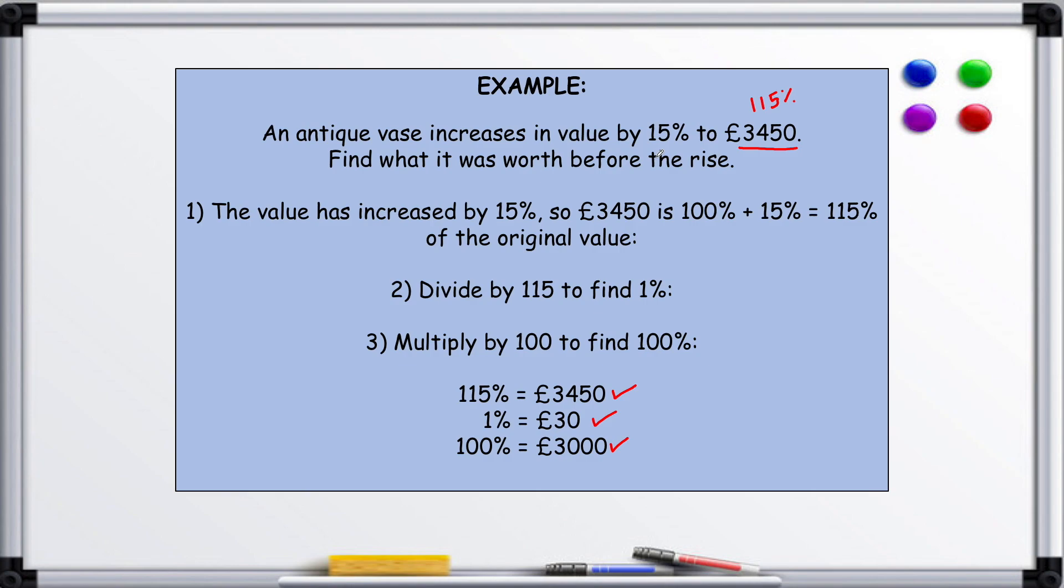So you work out what the new value is as a percentage - in this case, 115 - divide by that 115, and then multiply by 100 to get your original value.